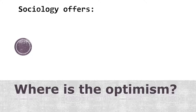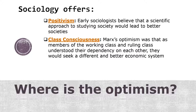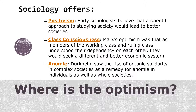So where is the optimism? What does sociology have to offer? These are three terms to review to help us understand this chapter and see the optimism Holmes is writing about. Positivism: early sociologists believed that a scientific approach to studying society would lead to better societies. Class consciousness: Marx's optimism was that as members of the working class and the ruling class understood their dependency on each other, they would seek a different and better economic system. Anomie: Durkheim saw the rise of organic solidarity in complex societies as a remedy for anomie in individuals as well as whole societies.